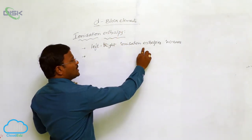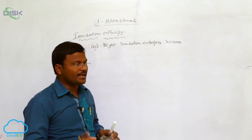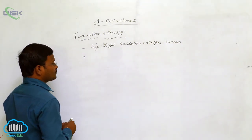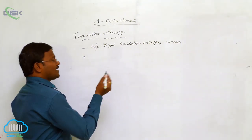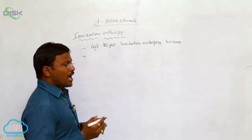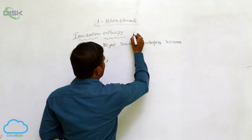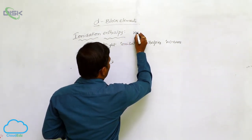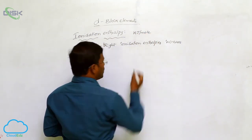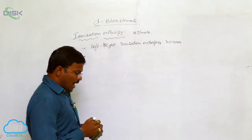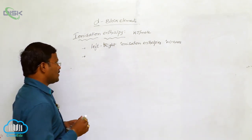Ionization enthalpy values increase from left to right, but they slightly vary. These ionization enthalpy values are expressed in kilojoules per mole, and the values will vary.